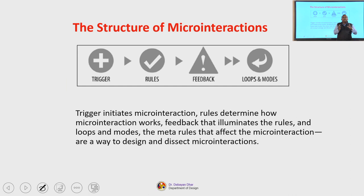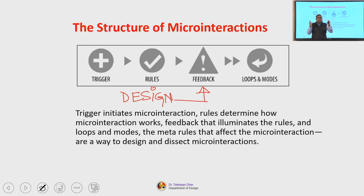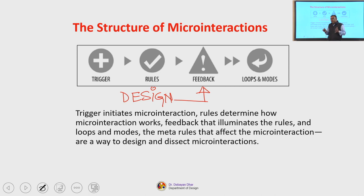How do you design for micro interactions? If you know the structure of micro interaction, you would be able to design for it. The structure of micro interactions consists of four critical phases: a trigger, a set of rules, feedback, and loops and modes. Whenever you design for micro interaction, you must consider these critical phases or characteristics.